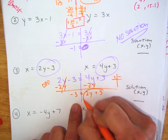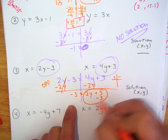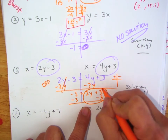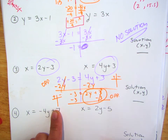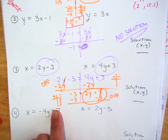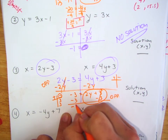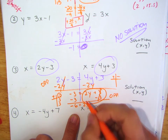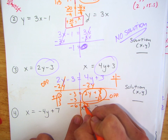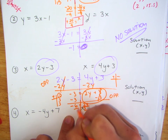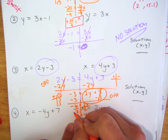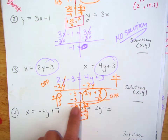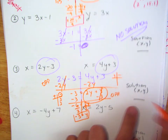Now I want to isolate the variable. So I'm going to do minus 3 on both sides using opposites, doing the T-chart on the other side. That gives me negative 6 equals 2y. Now I divide by the coefficient, which is 2, so y equals negative 6 divided by 2, which is negative 3.